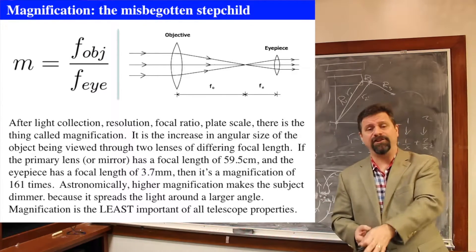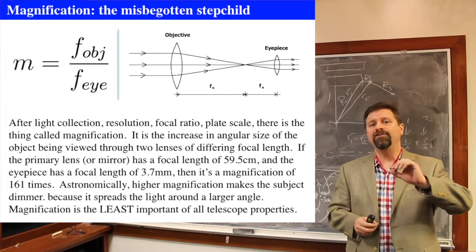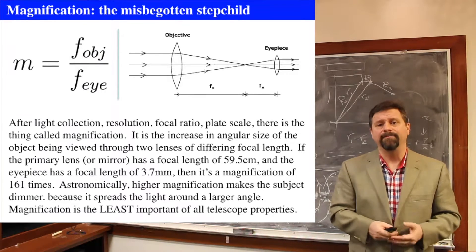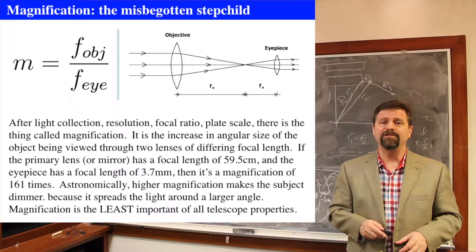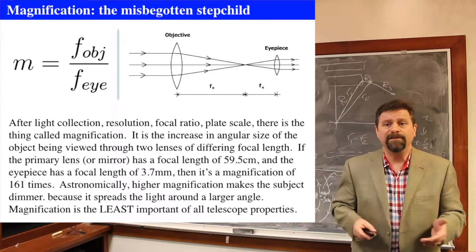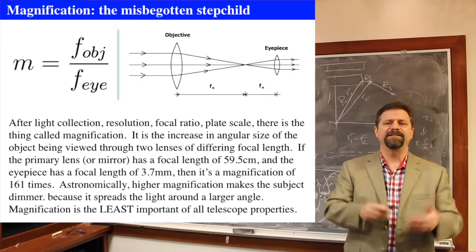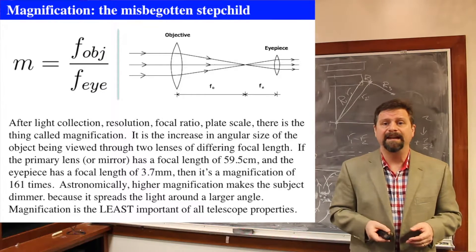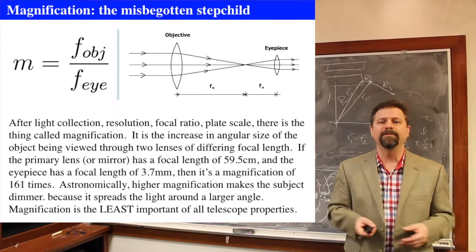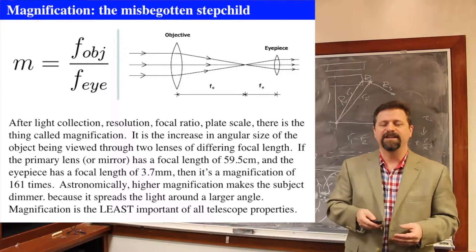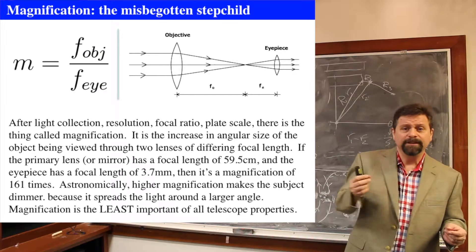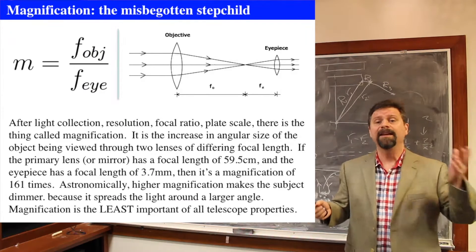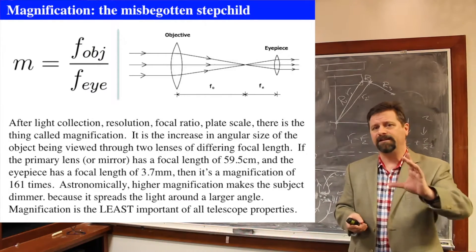But what actually is magnification? Magnification is the apparent change in angular size that you see an object to be because of the effect of the eyepiece. So the magnification is the focal length of the objective divided by the focal length of the eyepiece. So if you have a primary length, in this example, the focal length of the primary is about 60 centimeters and the focal length of the eyepiece maybe is 3.7 millimeters, then you're going to have a magnification of 161 times. So if you have a really short eyepiece focal length, then the magnification is going to blow up and be really big for a given objective.